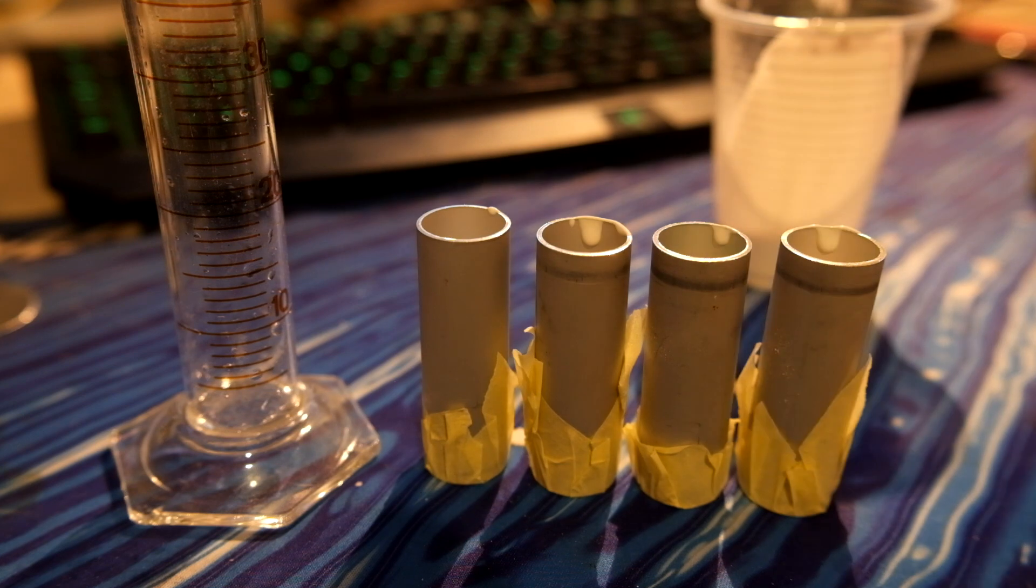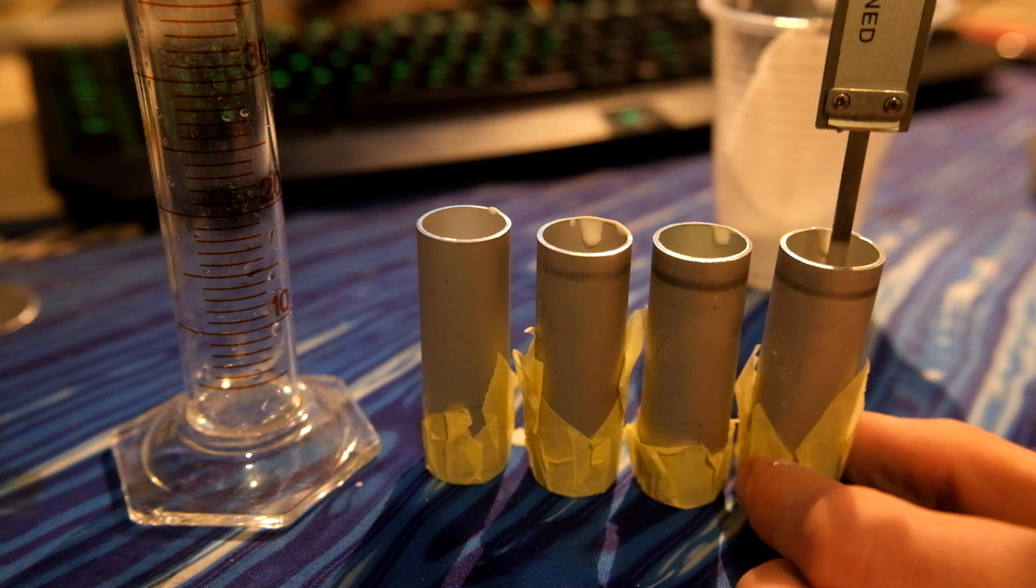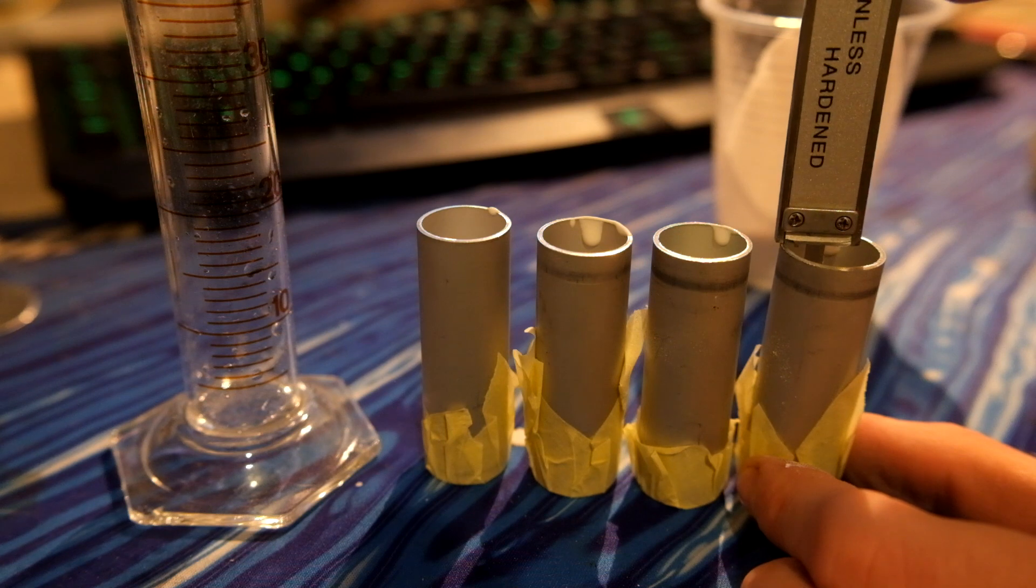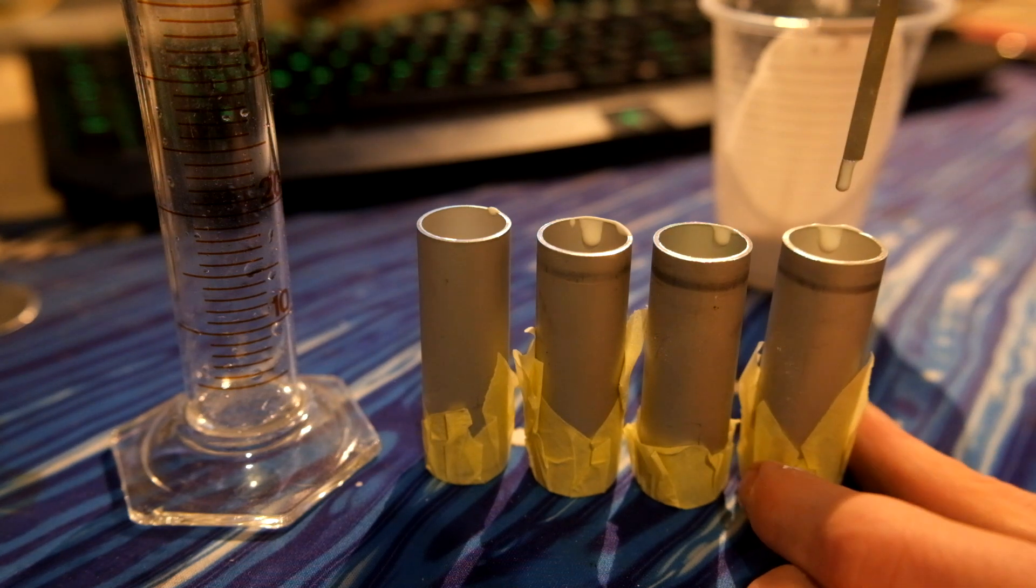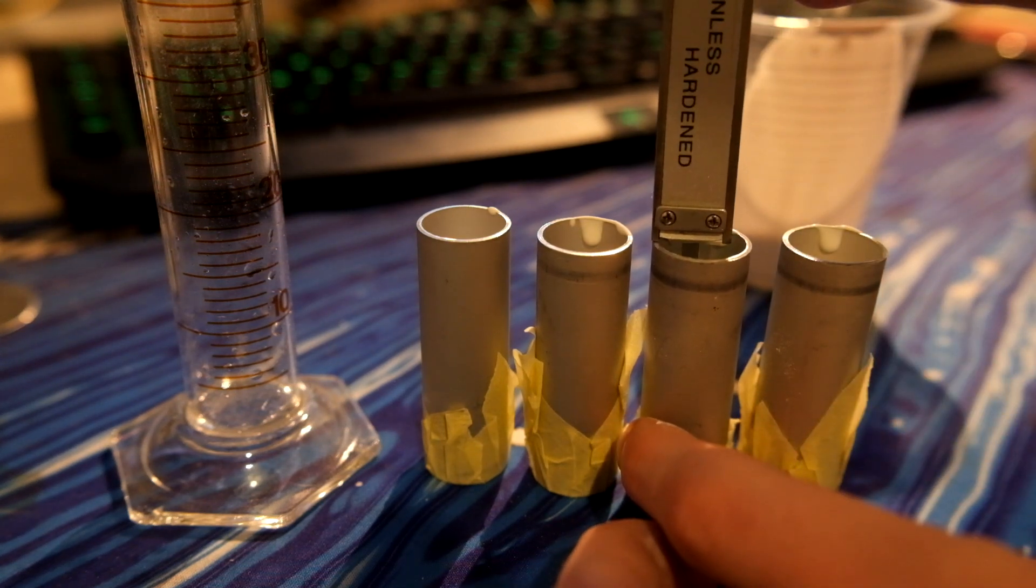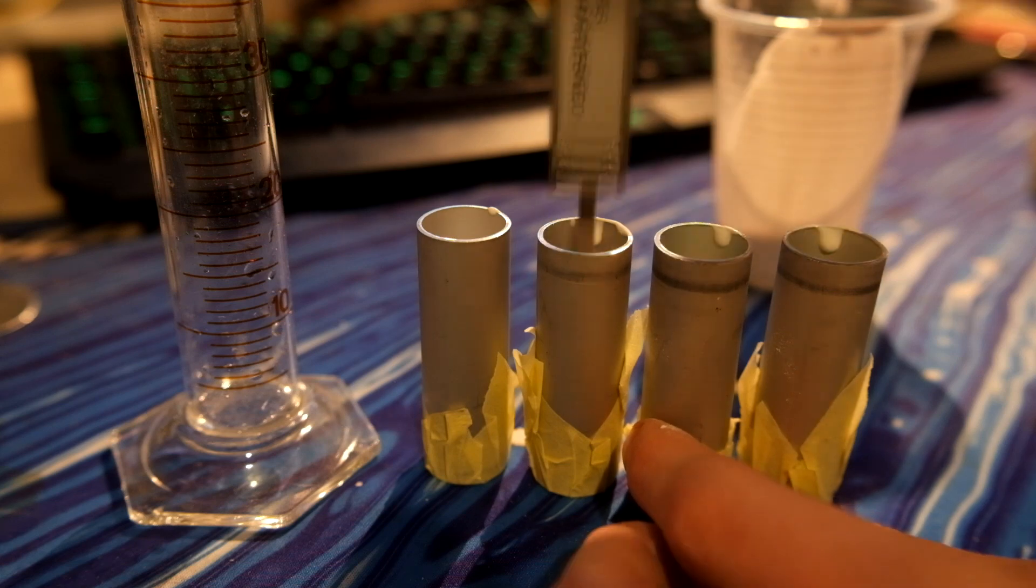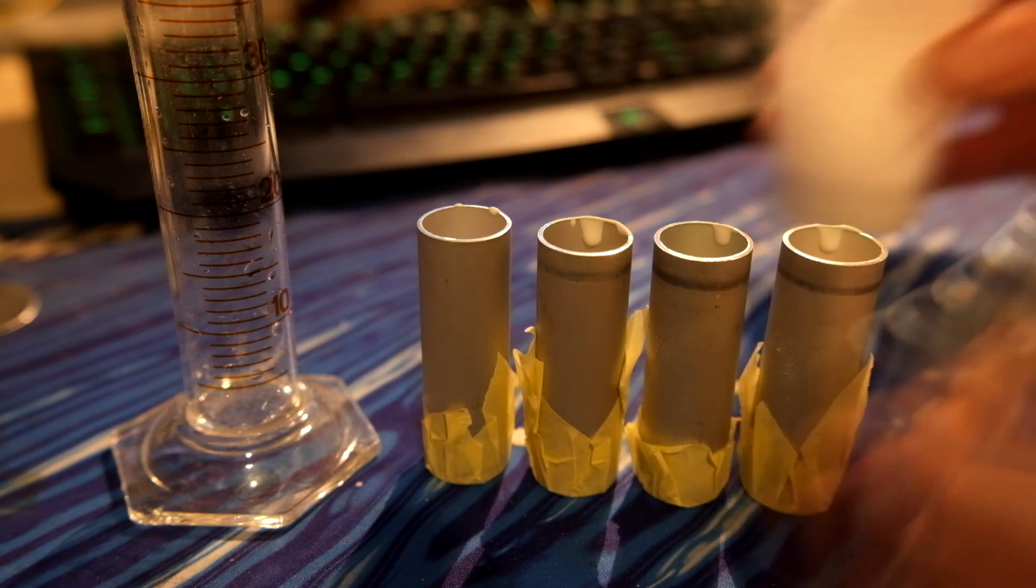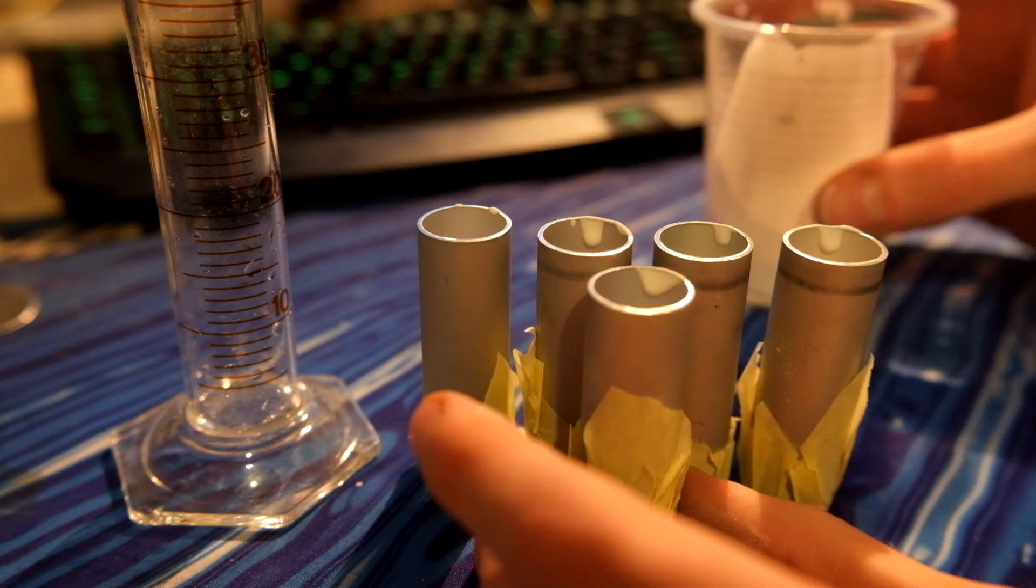I'm using a pair of digital calipers to make sure that the nozzle sizes are approximately even between my motors. Although just weighing them on a scale would be a better way of doing this. The nozzle thickness is about one-sixth of the total motor length.